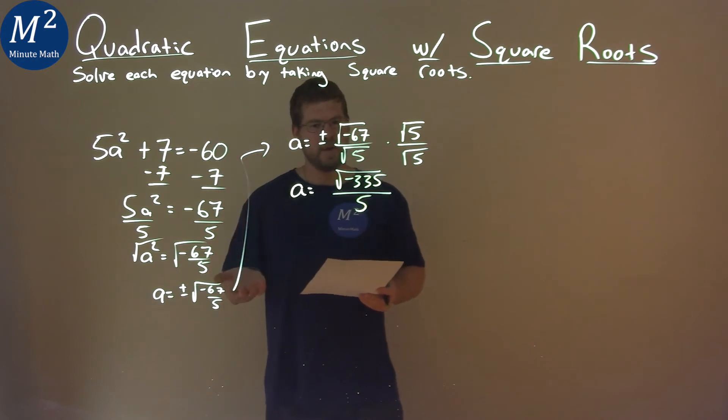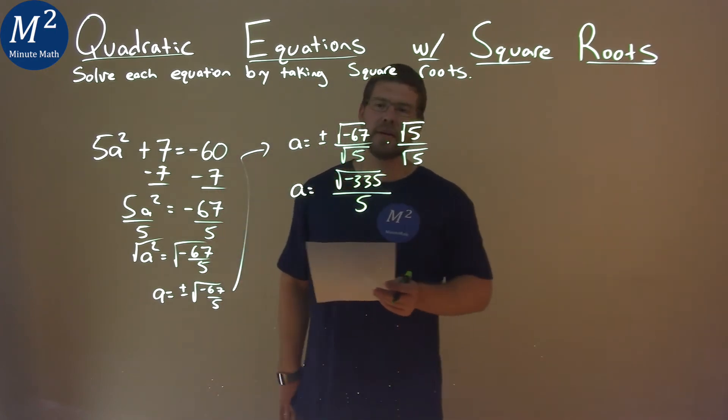So now we're good. We don't have the square root in the denominator, but I do have a negative in the square root.